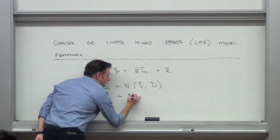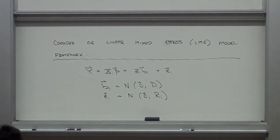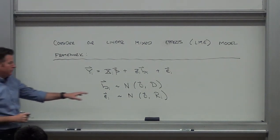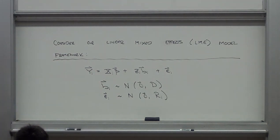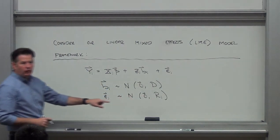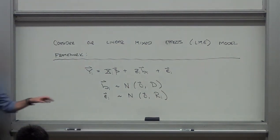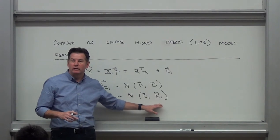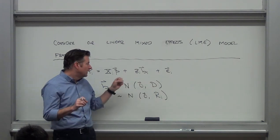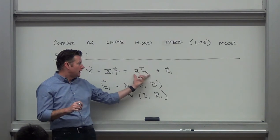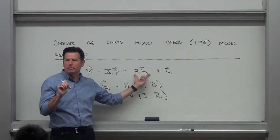For epsilon-I, we assume it's normally distributed with mean zero, with residual variance-covariance matrix R-I. The classic linear mixed effects model takes R-I to be sigma-squared times an identity matrix — just random error conditional on the random effects. By conditioning on the I-th sampling unit's random effects, everything else just looks random.